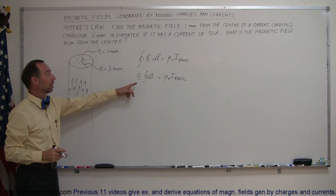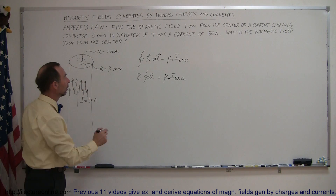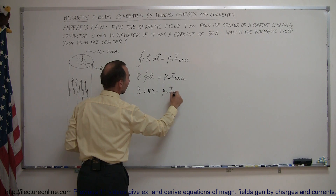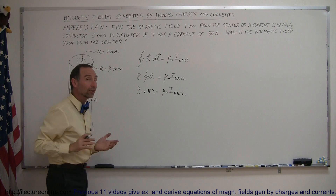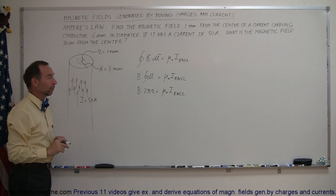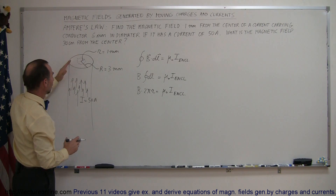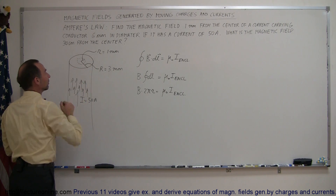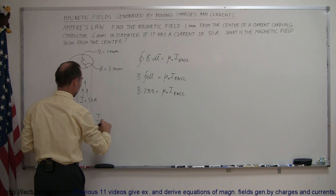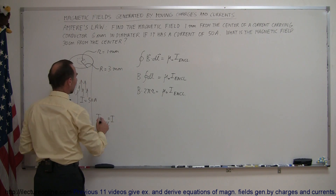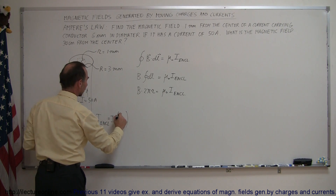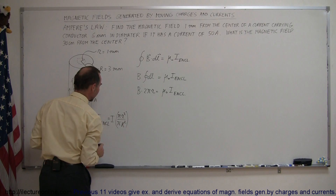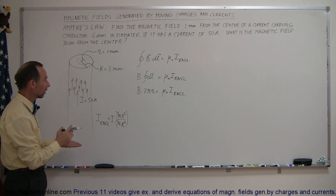The next thing we do is find out what this integral is. It's simply the circumference of that little circle — the radius is little r — so we can write that B times 2π times little r is equal to mu sub naught times I enclosed. Now we need to find out how much current is flowing through that little portion of the conductor. It's going to be the total current times the ratio of the cross-sectional area of the little circle divided by the cross-sectional area of the entire conductor. So I enclosed equals I times pi little r squared divided by pi big R squared. The pi's cancel out, leaving I times little r squared divided by big R squared.